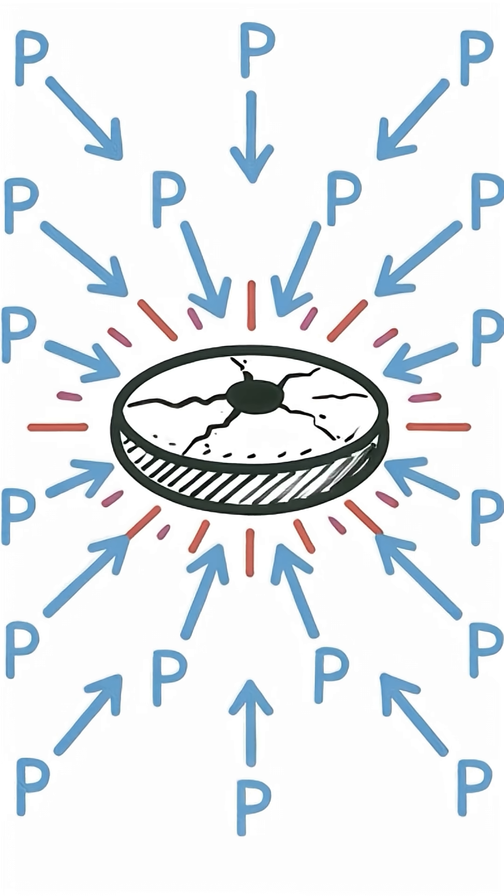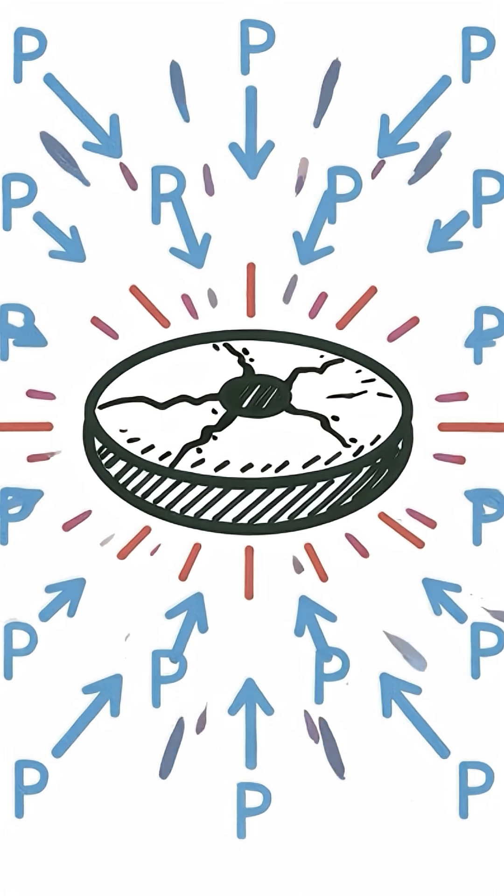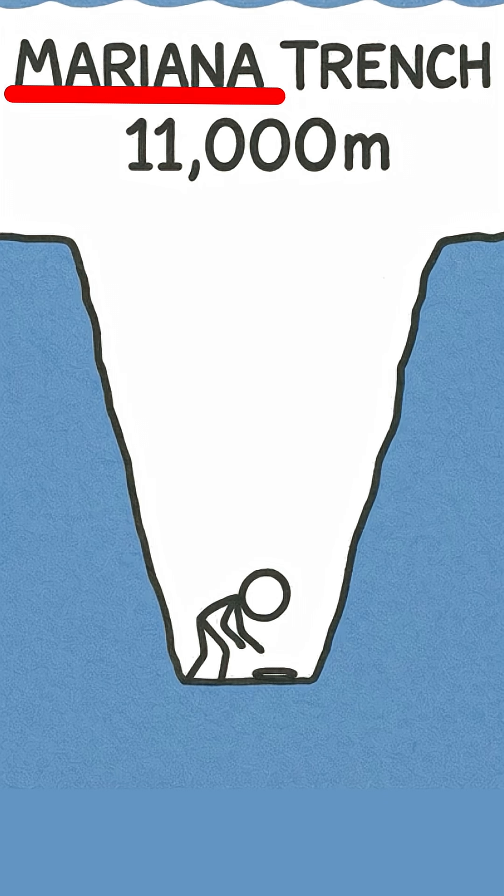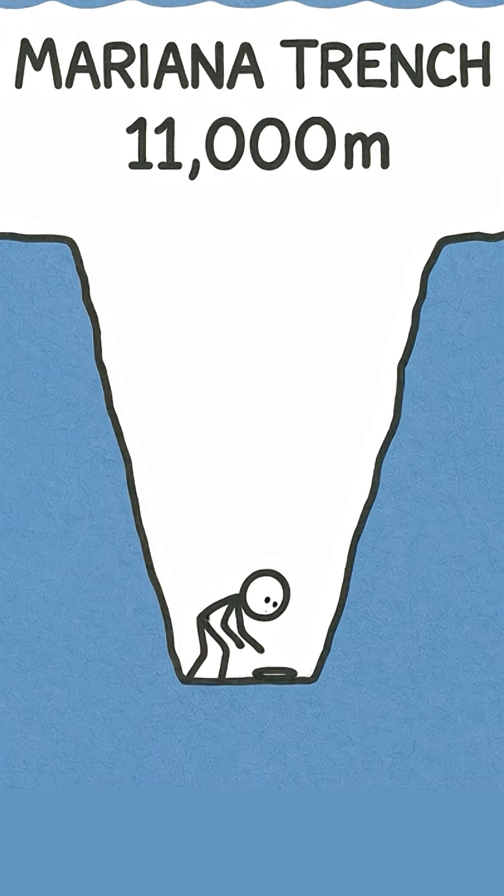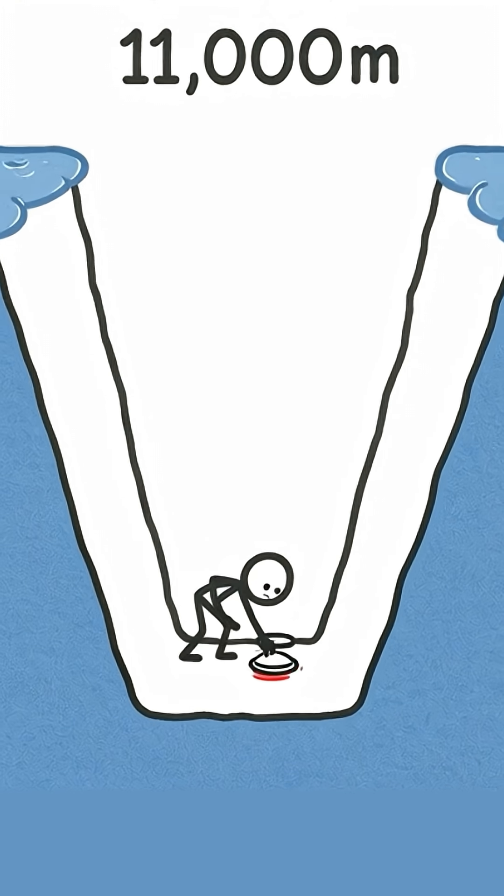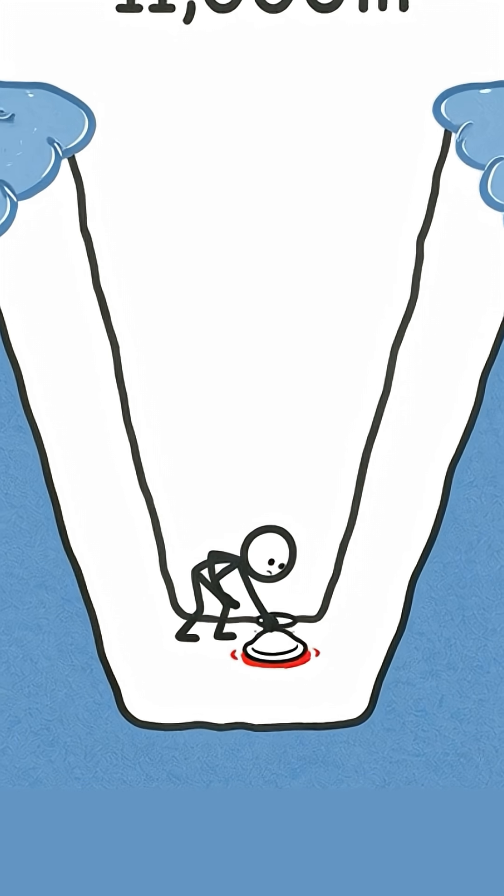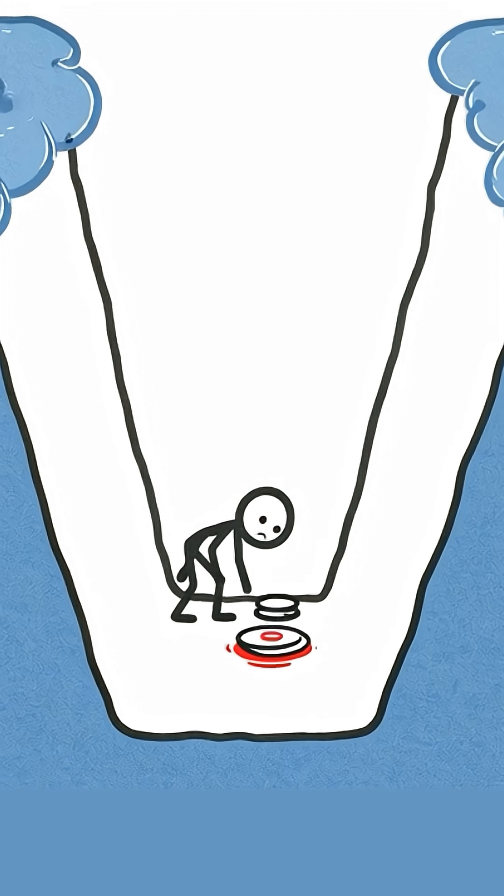The ball doesn't just sink. It implodes and turns into a tiny, dense disk of plastic. The depth of the Mariana Trench is 11,000 meters. That is 366 times deeper. There are no intact balls on the bottom. They are destroyed long before.